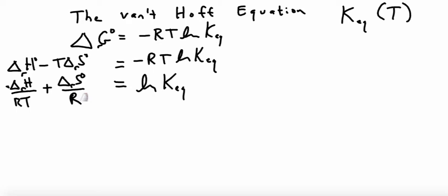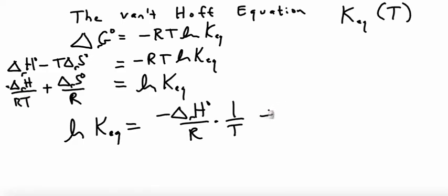Okay, so this is usually written actually the other way around. And so I'll go ahead and write it that way. The log of K equilibrium is equal to negative delta H over R. And I'm going to split out the 1 over T for reasons that you'll see in a second. So I'm just splitting up that. Plus delta S standard over R.